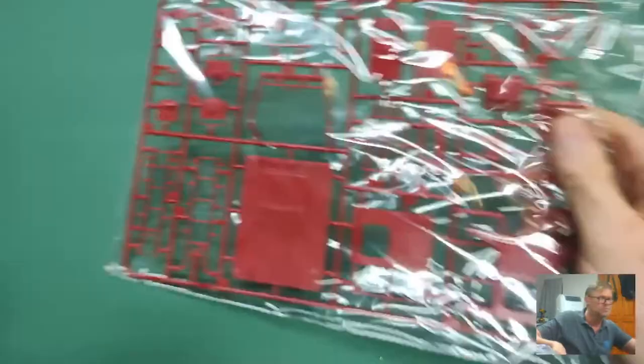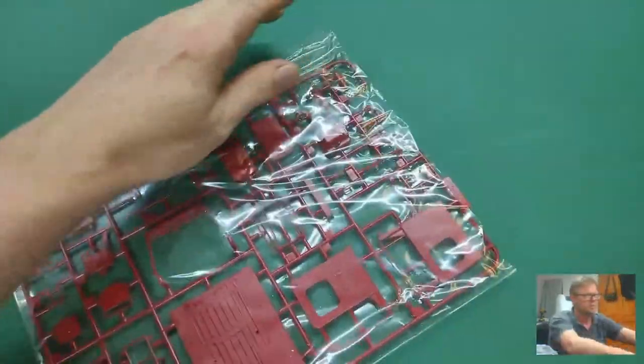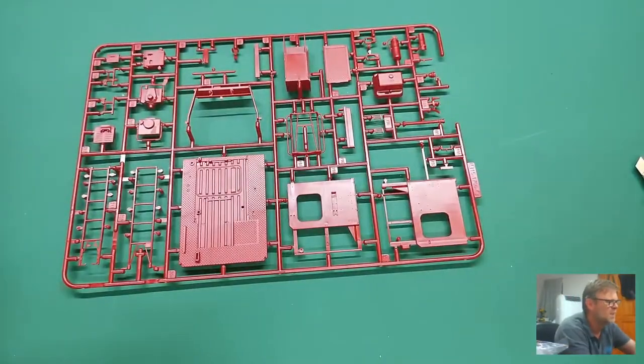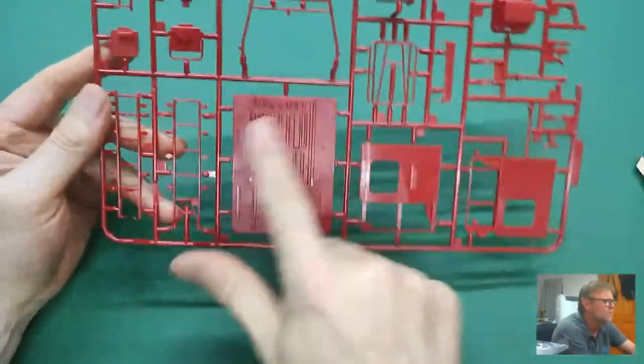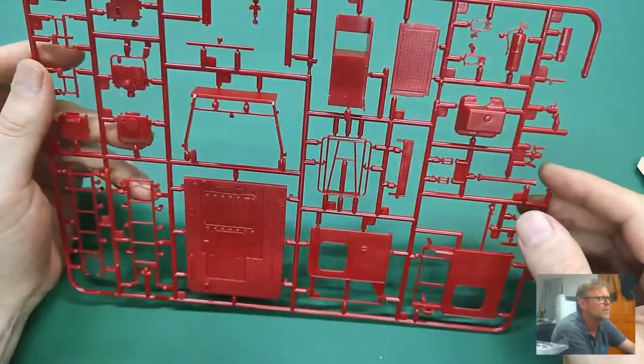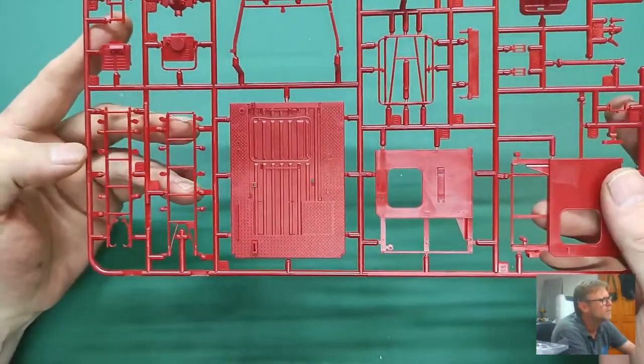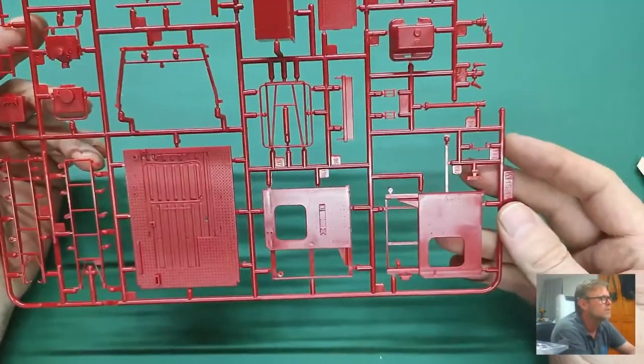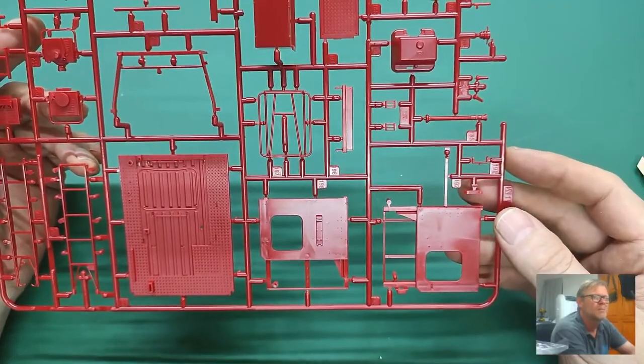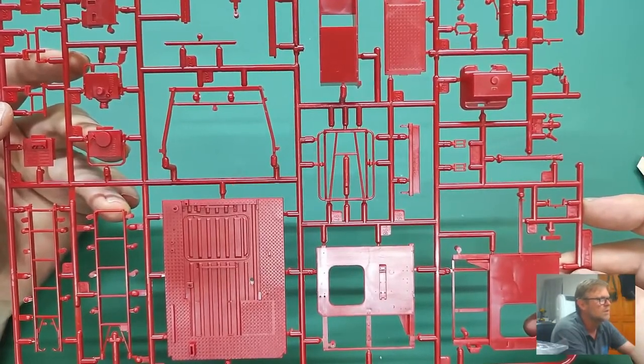Then we have one last sprue which is red. Here we go. I think that's the bottom plate for the back part where all the equipment gets - I think that might be the pump cover. Here is a fire extinguisher, ladder is right over here on the left-hand side, and other parts which come on there which I don't even dare to identify. But as you can see, it all looks very clean. I don't see any flash whatsoever, just a normal cleanup and you should be good to go.